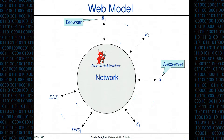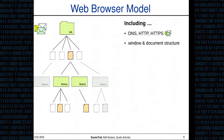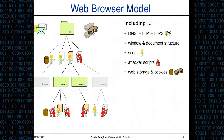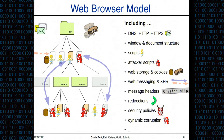The most interesting and complex component is the web browser. Our web browser model is quite complex and includes many details: DNS, HTTP, and HTTPS messages; a complex window and document structure; scripts that can be honest or dishonest (attacker scripts); modern technologies such as web storage; legacy technologies such as cookies; web messaging via post messages between windows; XMLHTTPRequests or Ajax; and many more details such as message headers, HTTP redirections, security policies, navigation policies, and dynamic corruption.